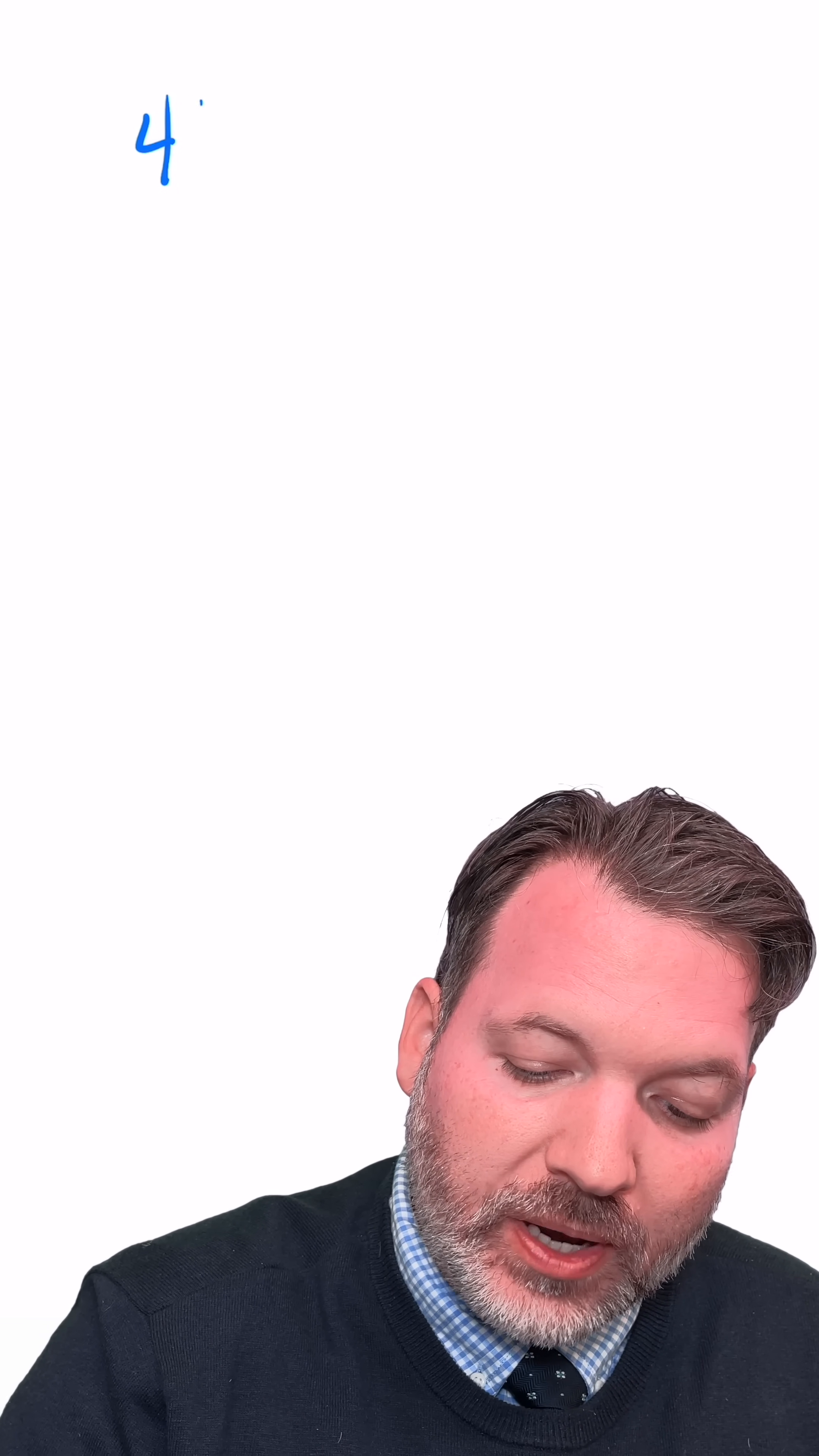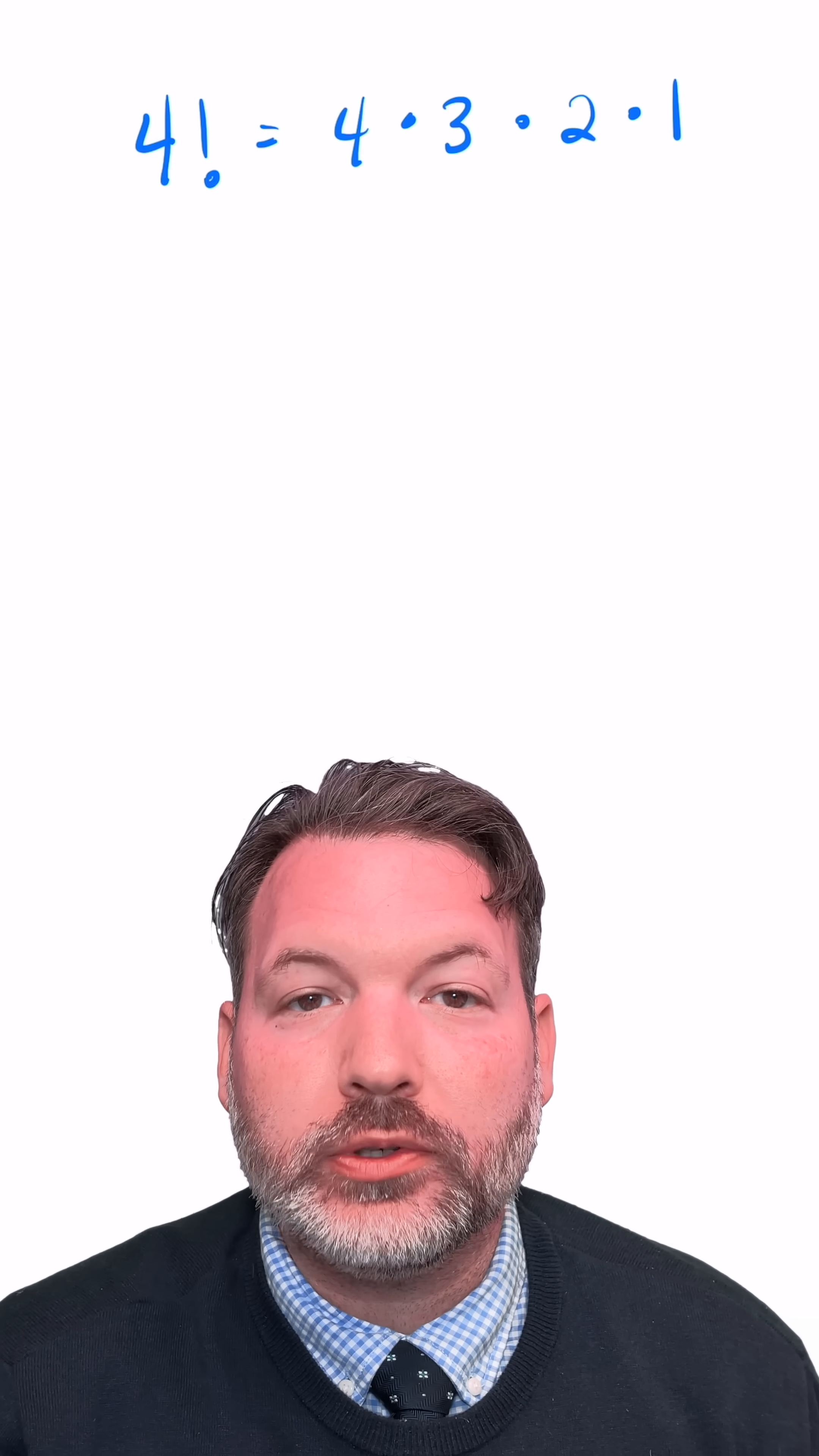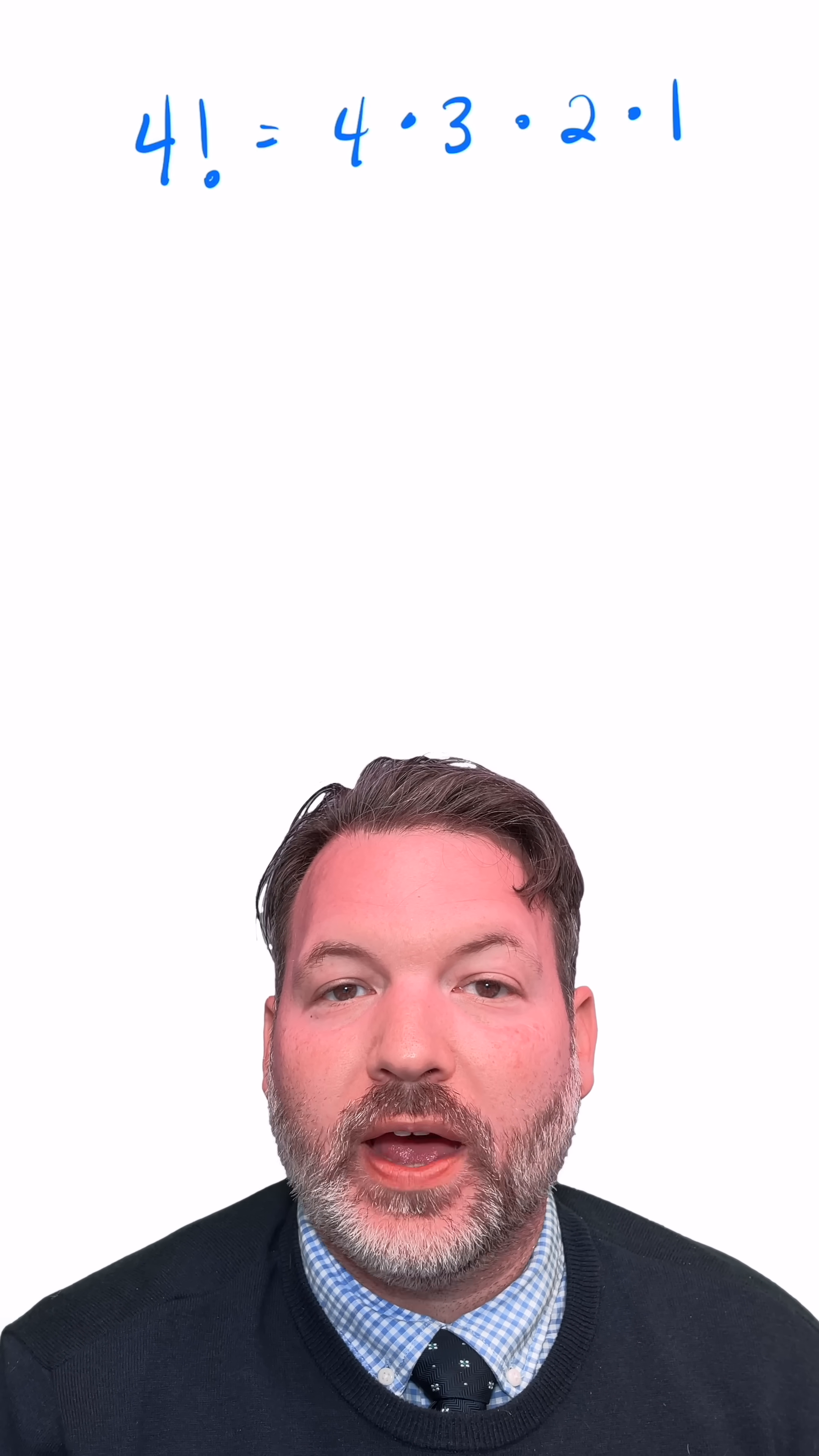A pretty typical way to introduce the factorial is to start with some natural number like four, for example, and then count down to one. The product of those four natural numbers is what we call four factorial.